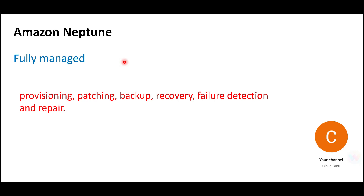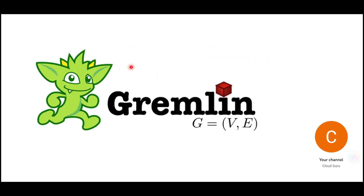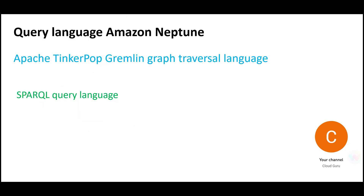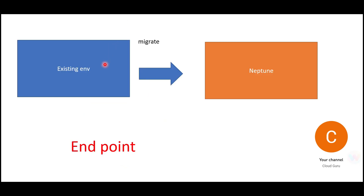The query languages used with Neptune are Apache TinkerPop Gremlin graph traversal language and SPARQL. Both are used for querying graph databases. If you have existing graph databases in your environment, you can migrate them to Neptune using endpoints. You may be asked a scenario around this in Solution Architect Associate SAA-C03, as well as in Data Analytics and Solution Architect Professional — this topic is important for all these certifications.